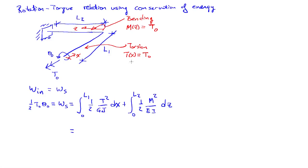Using my expressions for the internal torque and the internal moment in the system, I get one-half T0 squared L1 over GJ, plus one-half T0 squared L2 over EI.